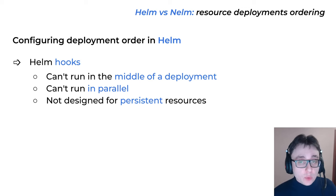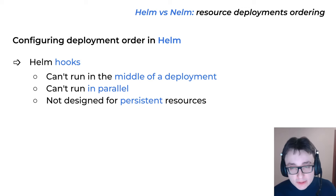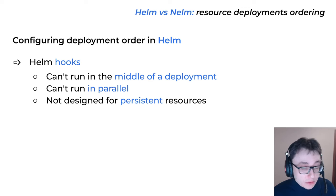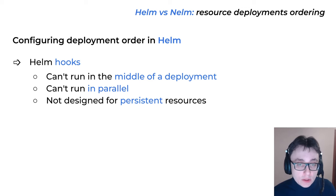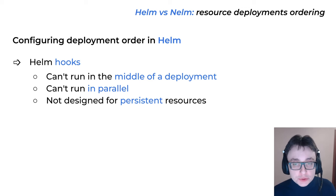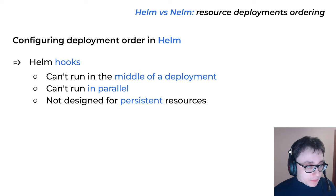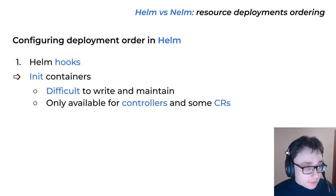If you have a deployment that is a hook but you actually need it as a persistent resource — something important that you don't just deploy and forget — and you rename this deployment in your Helm chart and redeploy, you will end up with two versions of your deployment in the cluster: one with the old name and one with the new name. There are also other issues, so hooks are not very useful for things like deployments or StatefulSets.